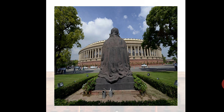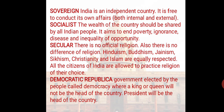This is one more view of the Indian Parliament House. Now I will come to the point about the four key words: sovereign, socialist, secular and democratic republic. First, sovereign — India is an independent country, free to conduct its own affairs both internal as well as external. Sovereign means India is an independent country.